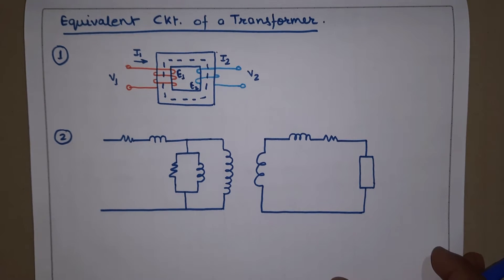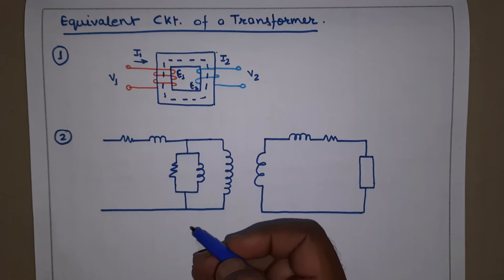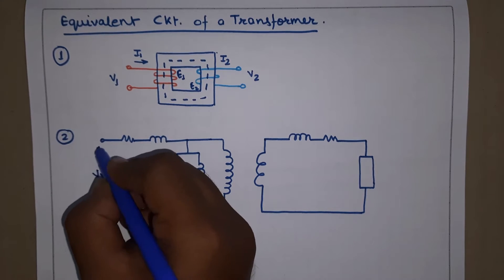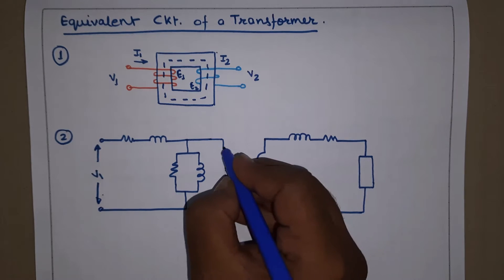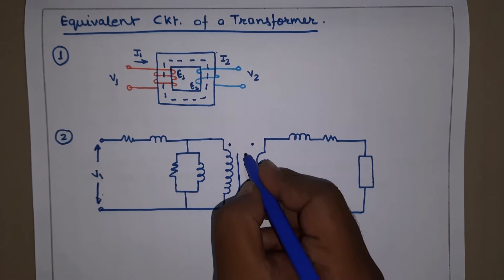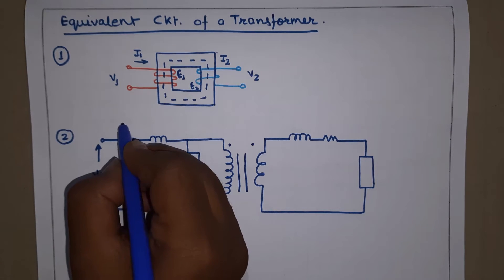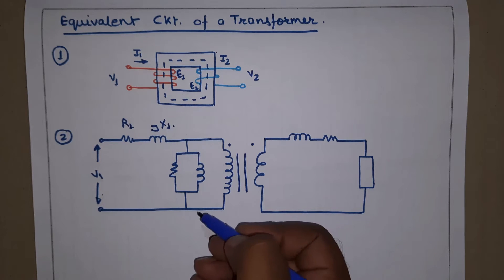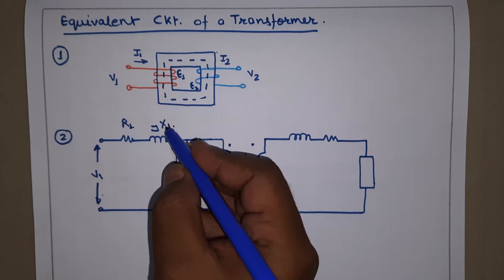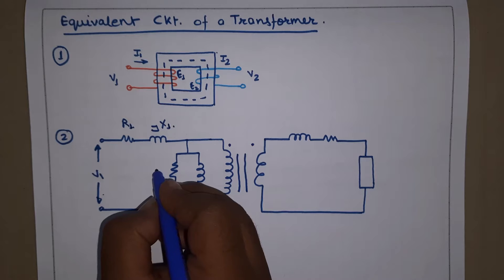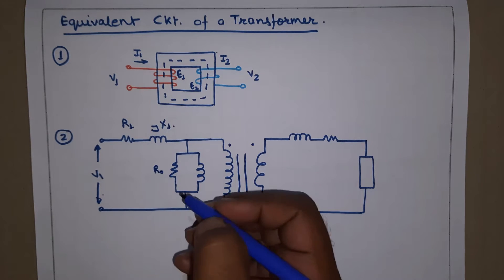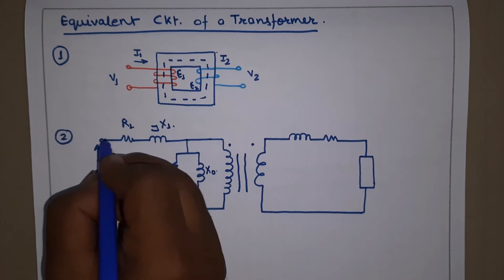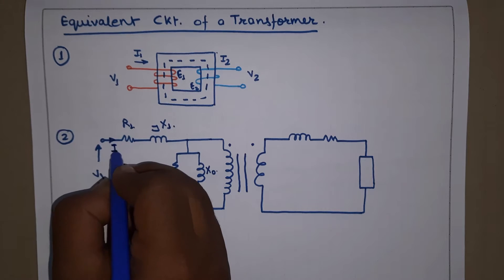Now we convert this to an electrical circuit. This is the frame of a transformer with v1 as input. We have an iron core transformer with r1 as the primary resistance and jx1 as the leakage reactance of the primary. This represents the copper loss written as r-naught, and the magnetic core loss written as x-naught.